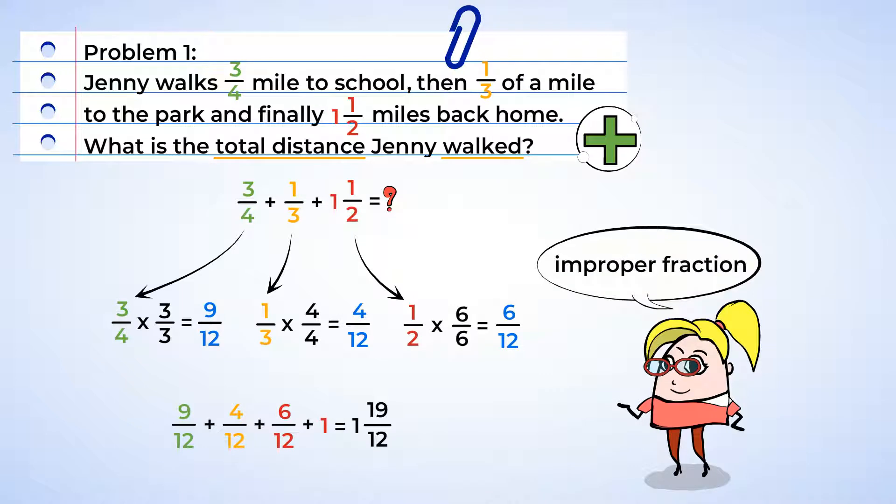Add in the whole number that we have and we get one and 19 twelfths. But that's an improper fraction that we're going to have to simplify. Now there's one group of 12 in 19, which we can make another whole. And now we have two and seven twelfths. Great work. Jenny walked two and seven twelfths miles.